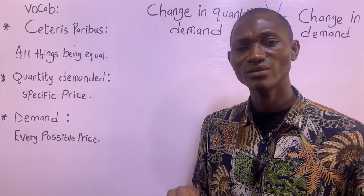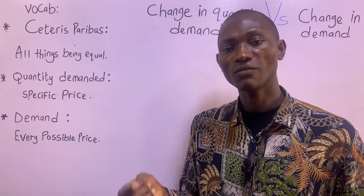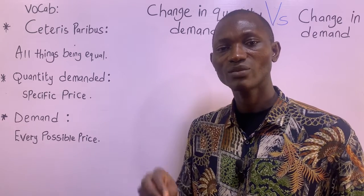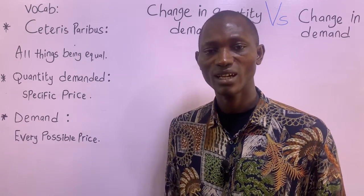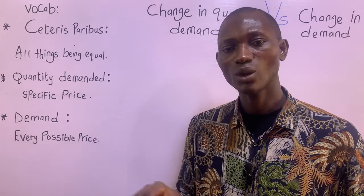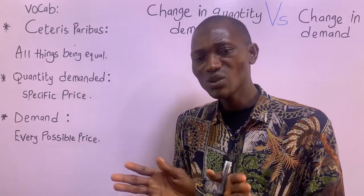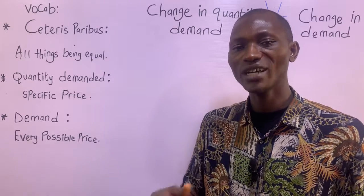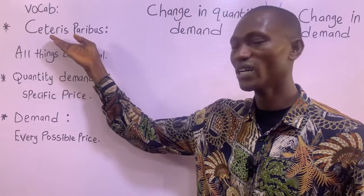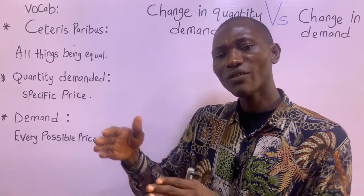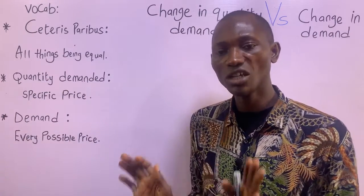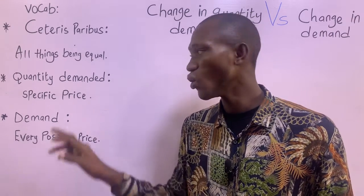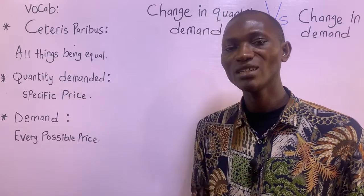Now, if we pick one of the factors — let's say the price of the commodity — and we say the lower the price, the higher the quantity demanded, and the higher the price, the lower the quantity demanded, this relationship only holds between price and quantity demanded when we assume Ceteris Paribus. That means all of the factors mentioned will not change — all of them will remain equal.